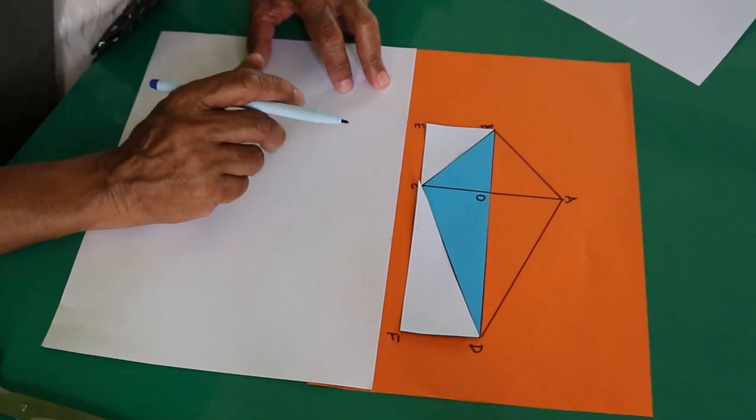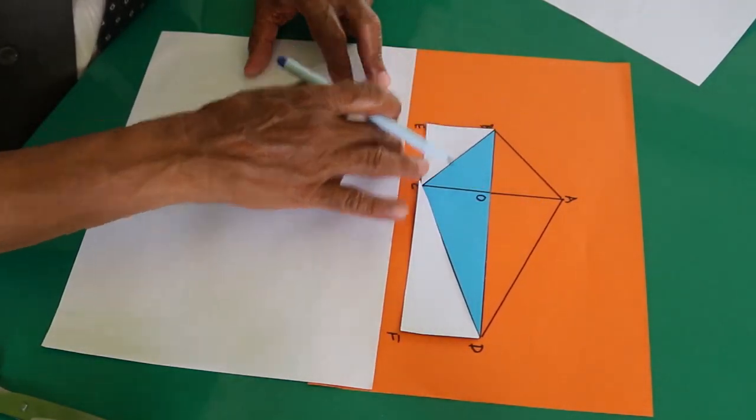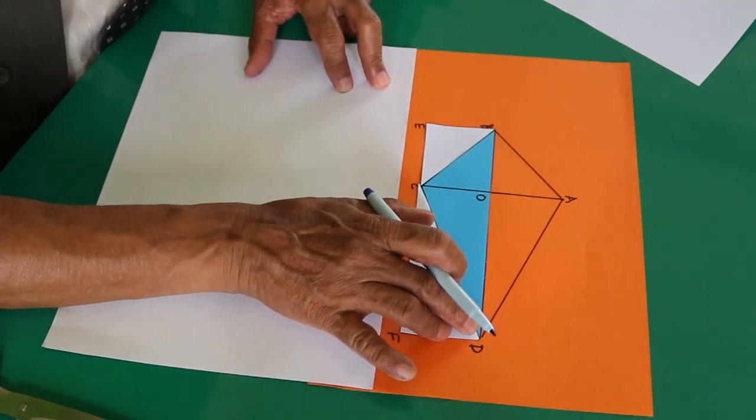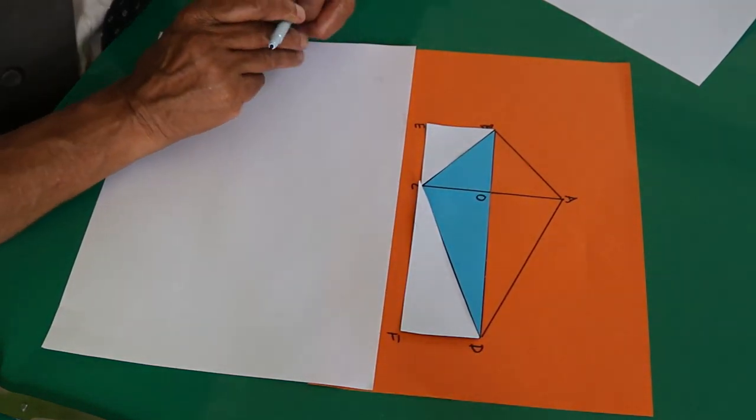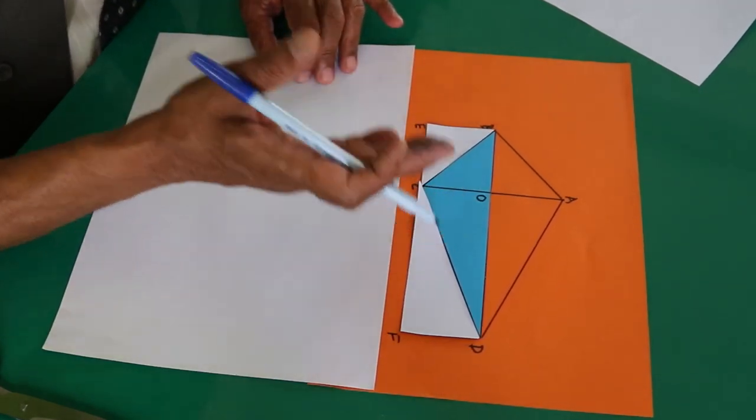What you have seen here is the area of this kite. This kite is equal to the area of this rectangle. In our previous presentation the area of the kite was half of the rectangle. Here it is equal to the rectangle.